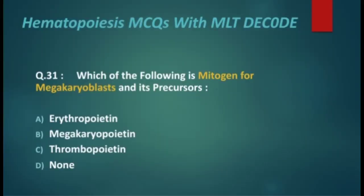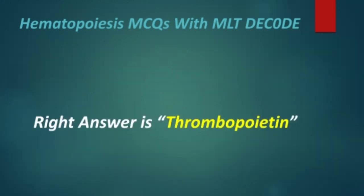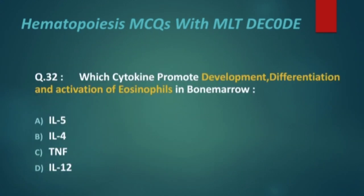Which of the following is a mitogen for megakaryoblast and its precursors? Options are: erythropoietin, megakaryopoietin, thrombopoietin, and none. The right answer is thrombopoietin.